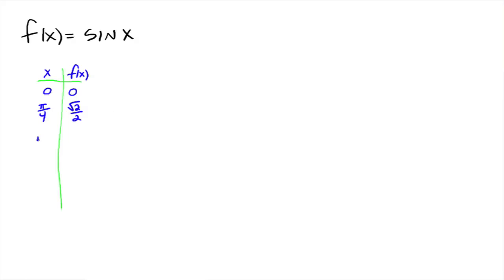And then let's just go ahead and take pi over 2. What's the sine of pi over 2? Well, that's 1. And then 3 pi over 4. Well, that's also the square root of 2 over 2. And then you get to pi, you're down here. What's the sine of pi? That's right. You're back at 0.